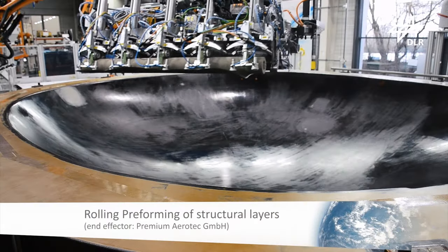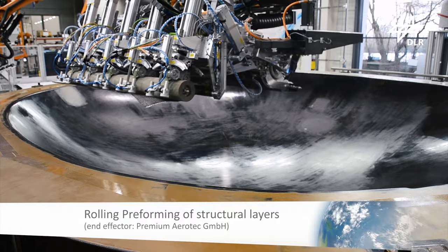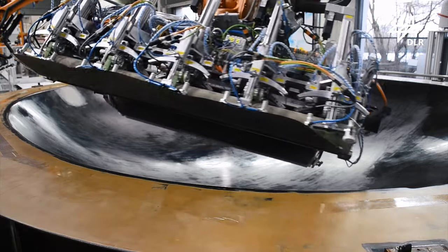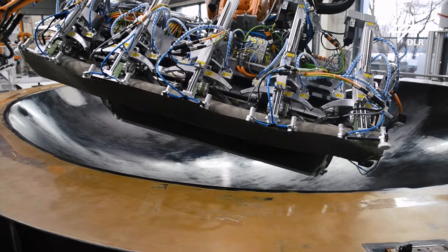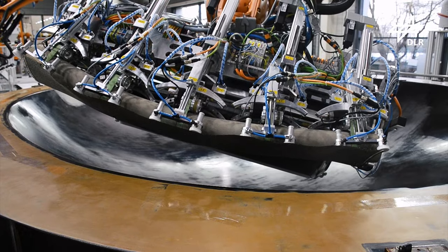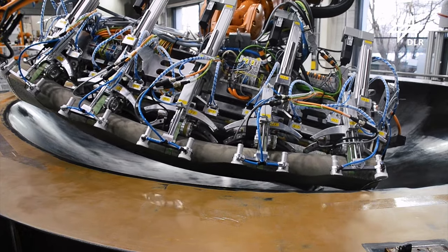The first layers of the long structural plies are placed by rolling end effector, which applies the material directly from the material roll, draping it properly onto the double curved tool surface.